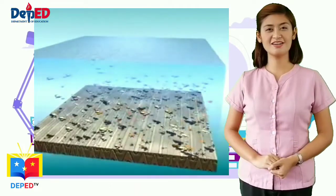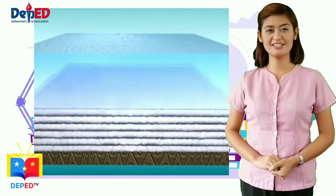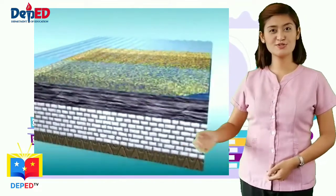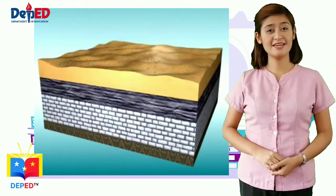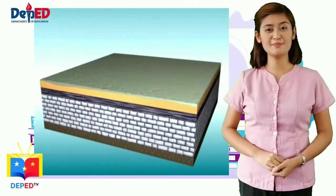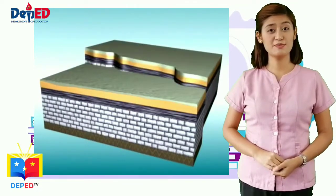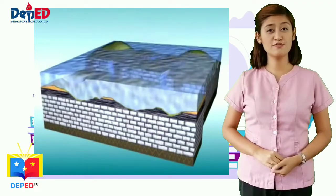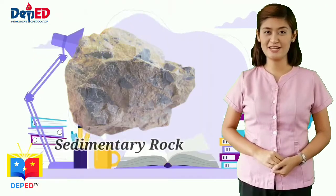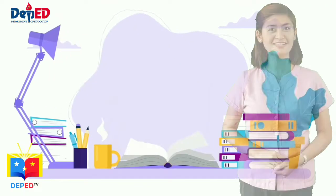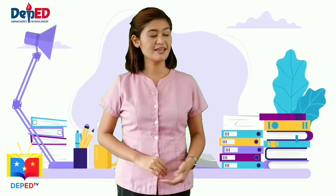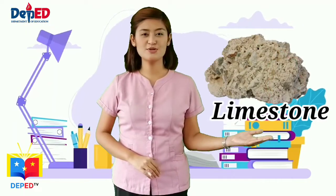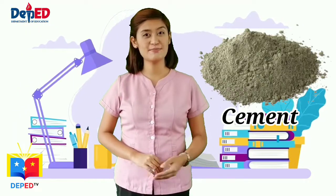Sedimentary rocks, on the other hand, are formed on or near the Earth's surface. If buried deeply, it becomes compacted and cemented, forming sedimentary rock. An example is limestone, which is used in making cement.